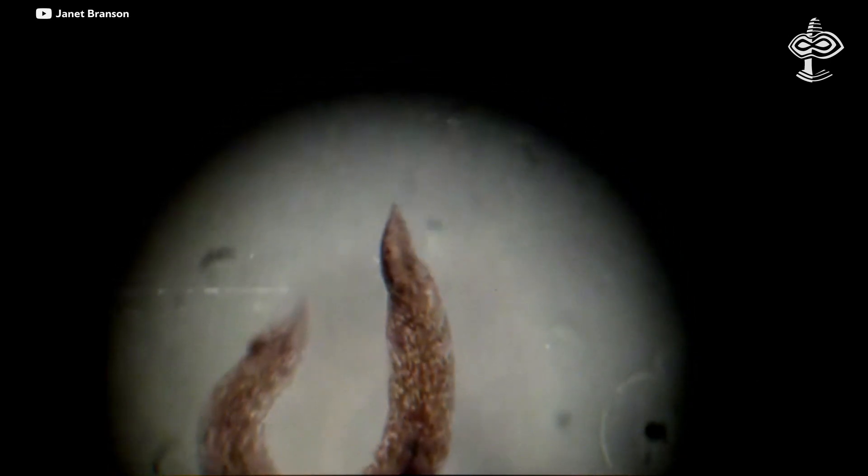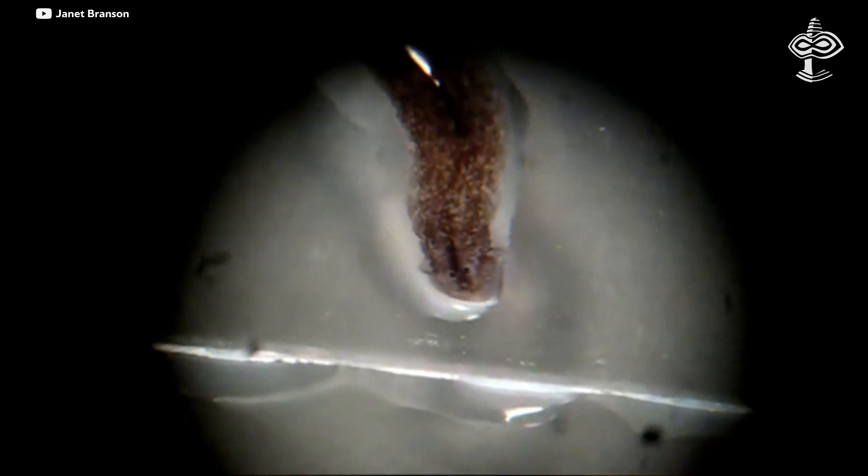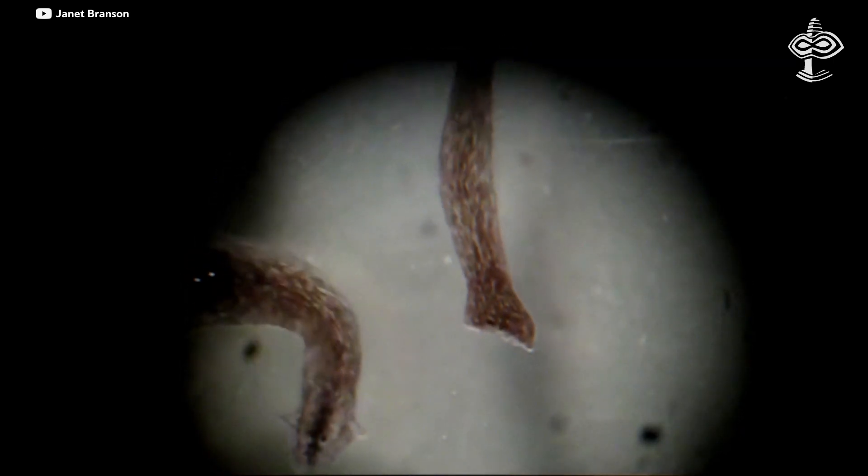In Levin's experiments with Planaria flatworms, it turns out that if you train them and then cut their heads off, the tail will regenerate a brand new brain that still remembers the original information, which poses a profoundly big question - where is the information from the brain actually stored?